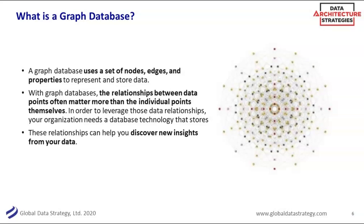So what is a graph database? The idea of a graph database is using nodes and edges to store relationships. The relationships between data points are as important, if not more important, than the individual points themselves — and that really helps you discover new insights. We have relationships in a relational database — customer buys product — but often in a relational database we're thinking more about the nouns: what are all the attributes on a customer? It's very prescriptive, and that is good.